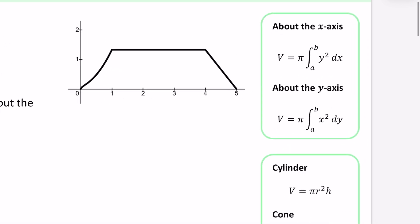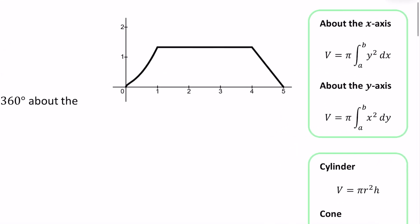A quick reminder: it's Further Maths so I don't need to go into too much detail. If it is about the x-axis, we do π y² dx — the x-axis has dx at the end and y² here. If it's about the y-axis, it has dy at the end and x² instead. The limits a and b refer to the x-axis in the first case and the y-axis in the second. You can always tell by the last part which axis it is referring to.